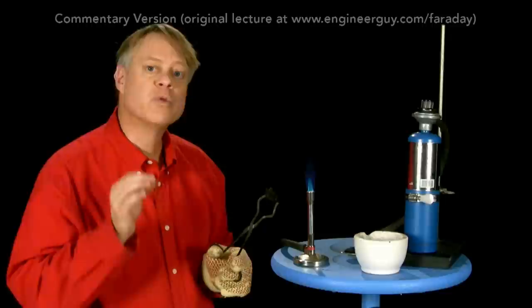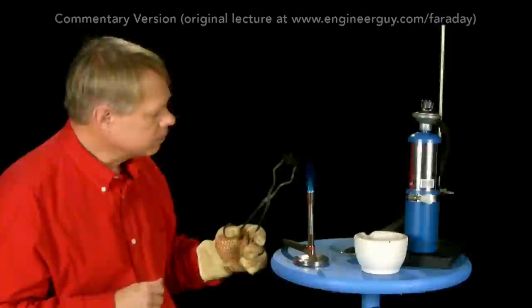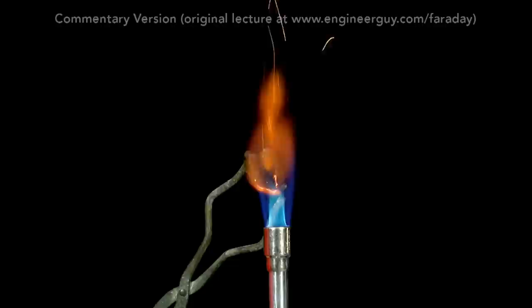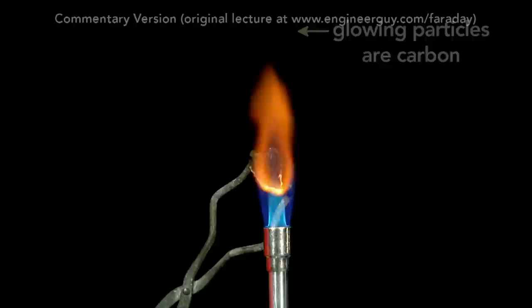So Faraday here is using reductionism. He said that carbon particles glow, so he's going to isolate the carbon. And interestingly, what he does here is he makes it human-sized, so he's got a large chunk of carbon. And when he puts it in a flame, you can see that it glows. And this, as he says, is what gives the candle its brightness.